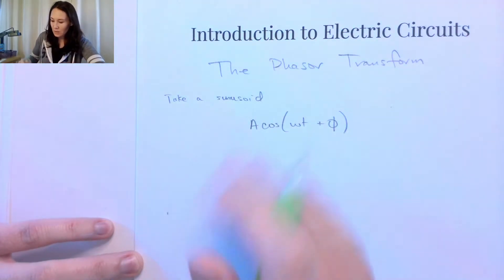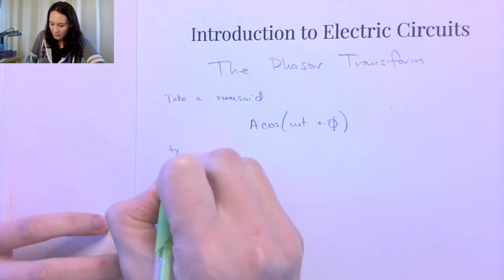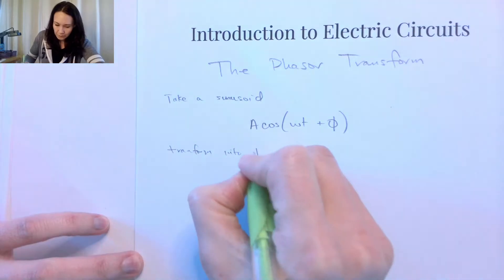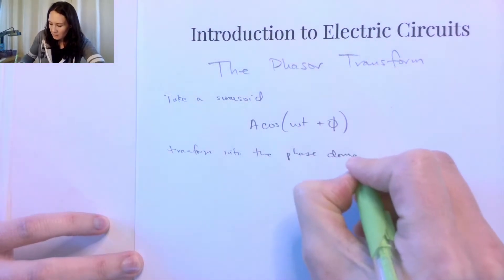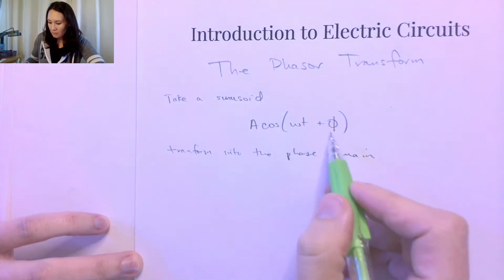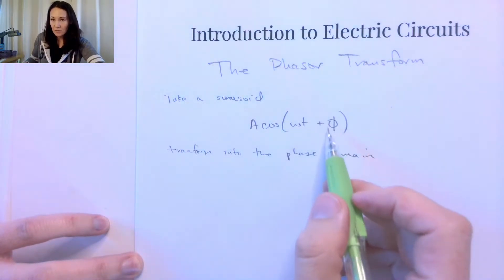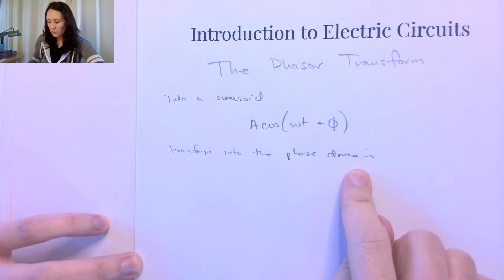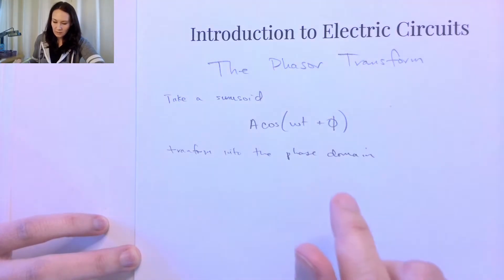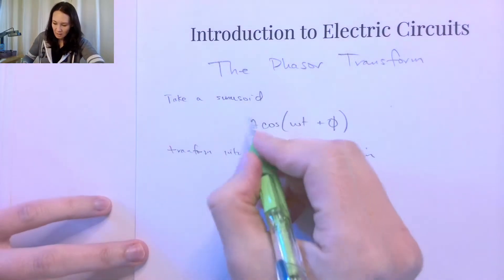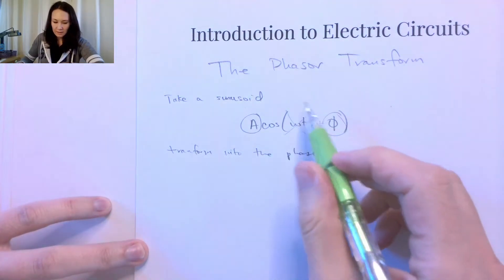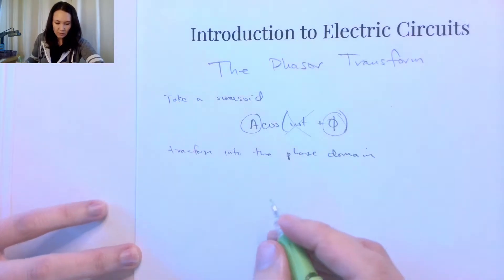Given a sinusoid in cosine form, the phasor transform is going to transform this sinusoid into the phase domain — a domain where the independent variable is the phase angle. This may also be referred to as the frequency domain. The resulting phasor representation will contain the amplitude information and the phase information, but it discards the time-dependent part of the sinusoid.